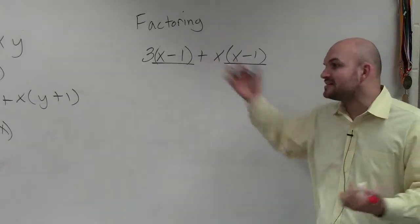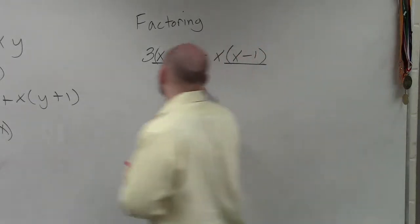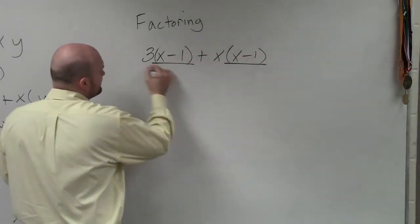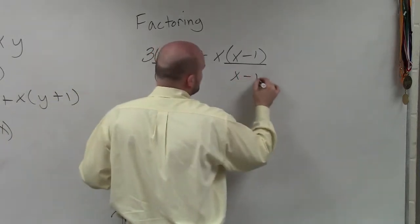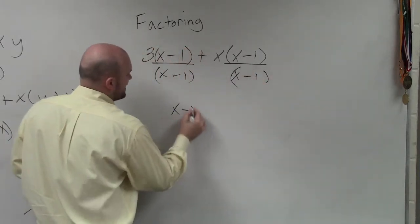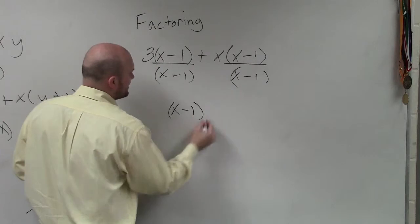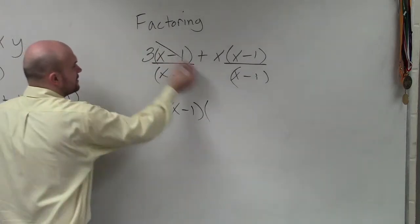So that is what you're going to divide out. When you divide out by x minus 1 from both terms, you have (x minus 1) in parentheses times what's left over?